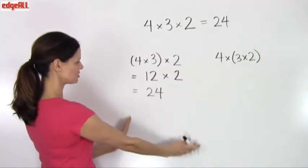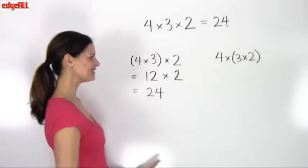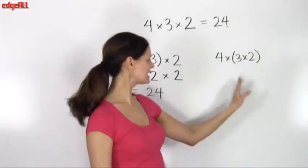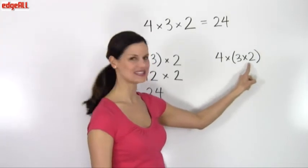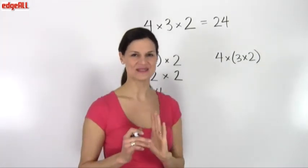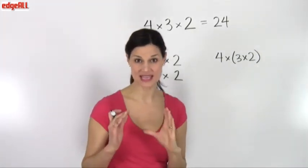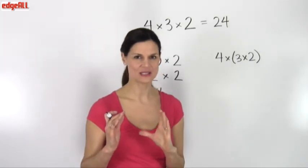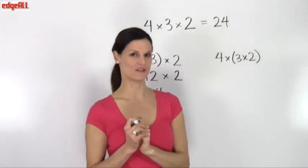So this is one version of the problem. But now let's look at this version. Same exact numbers, 4 times 3 times 2. But when I see those parentheses in math, it tells me perform this operation first.